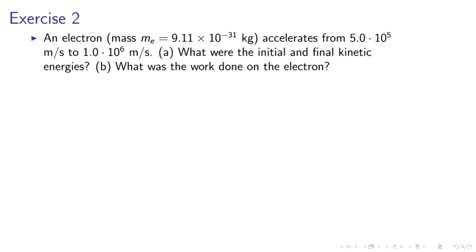Exercise 2. An electron accelerates from 5 times 10 to the 5th meters per second to 1.0 times 10 to the 6th meters per second. A. What are the initial and final kinetic energies? B. What was the work done on the electron?